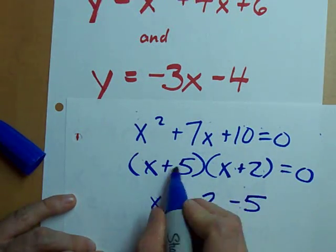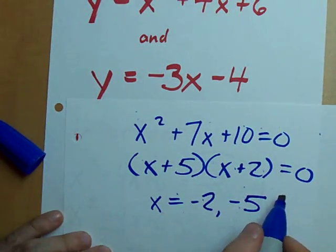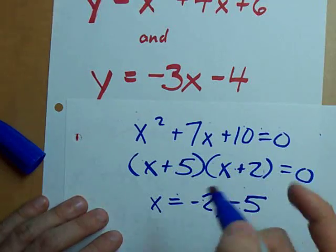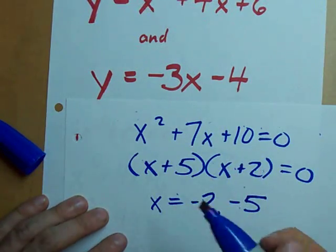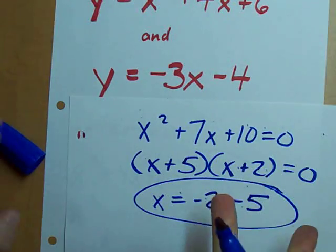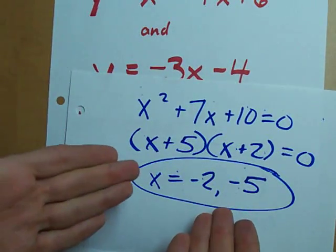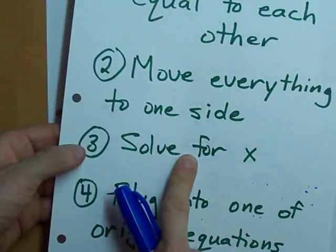Remember, when you factor it and you're looking for the values of x that satisfy the equation, you need to flip the signs. If you use the quadratic formula, you would get these numbers directly, but it would have taken longer. We just solved for x. Look at that. Check.